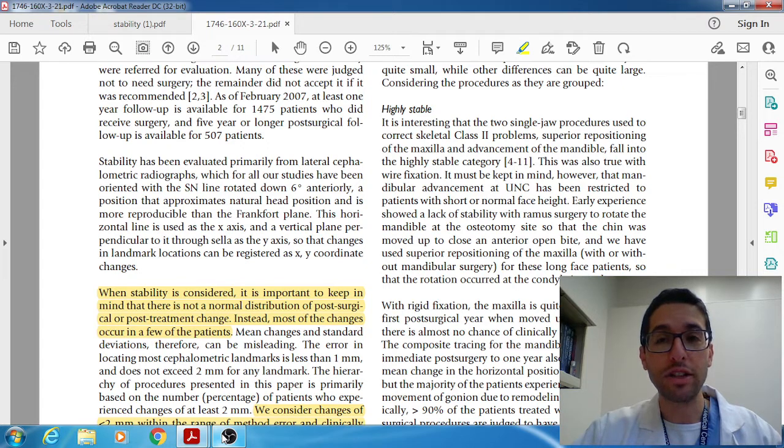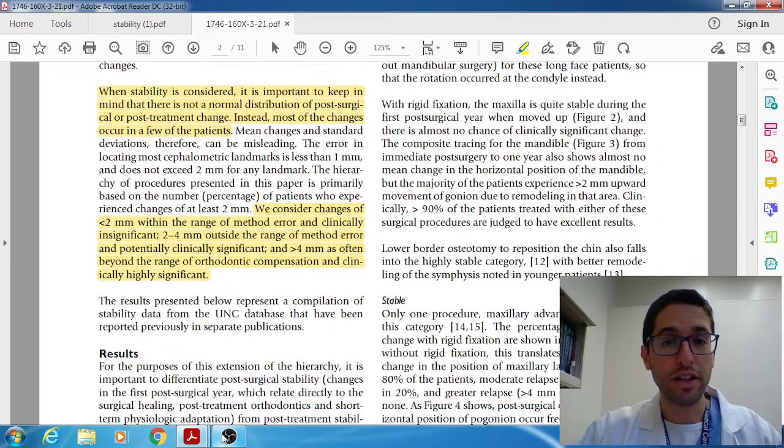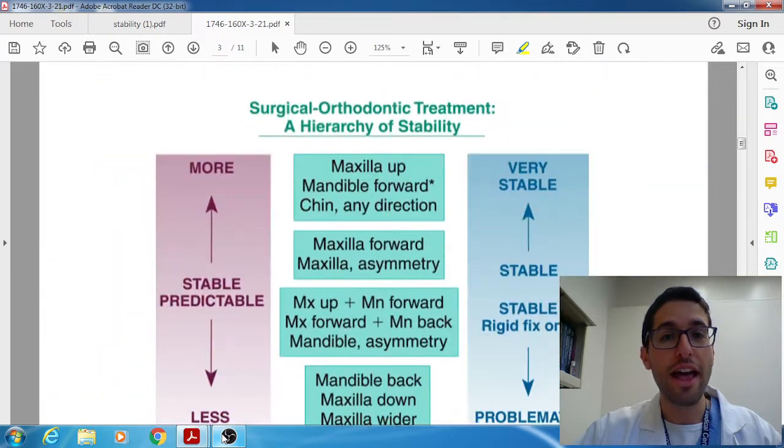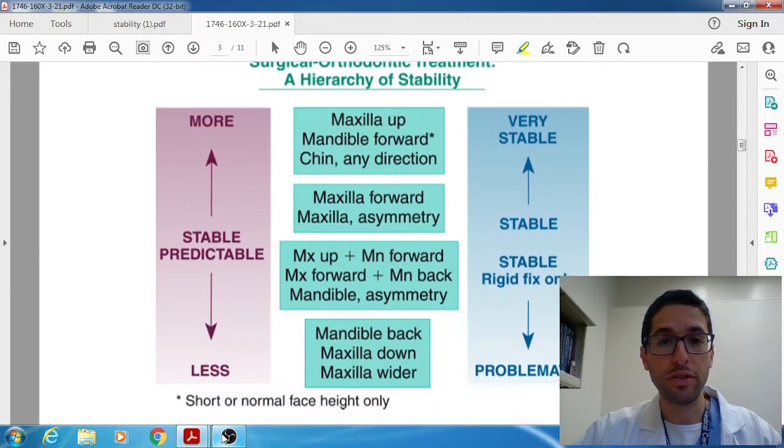And based on the degree of relapse for their 2,000 patients they were able to come up with a hierarchy of stability and say the following procedures are considered stable and they have very little relapse and are very highly predictable versus the following procedures are not considered very stable and they're problematic or worrisome. And let's take a look at their pyramid. This is what's very frequently referenced. So this is their hierarchy of stability and starting at the top that is considered very stable and then getting to the bottom that's where you get to the area of problematic procedures or problematic movements.